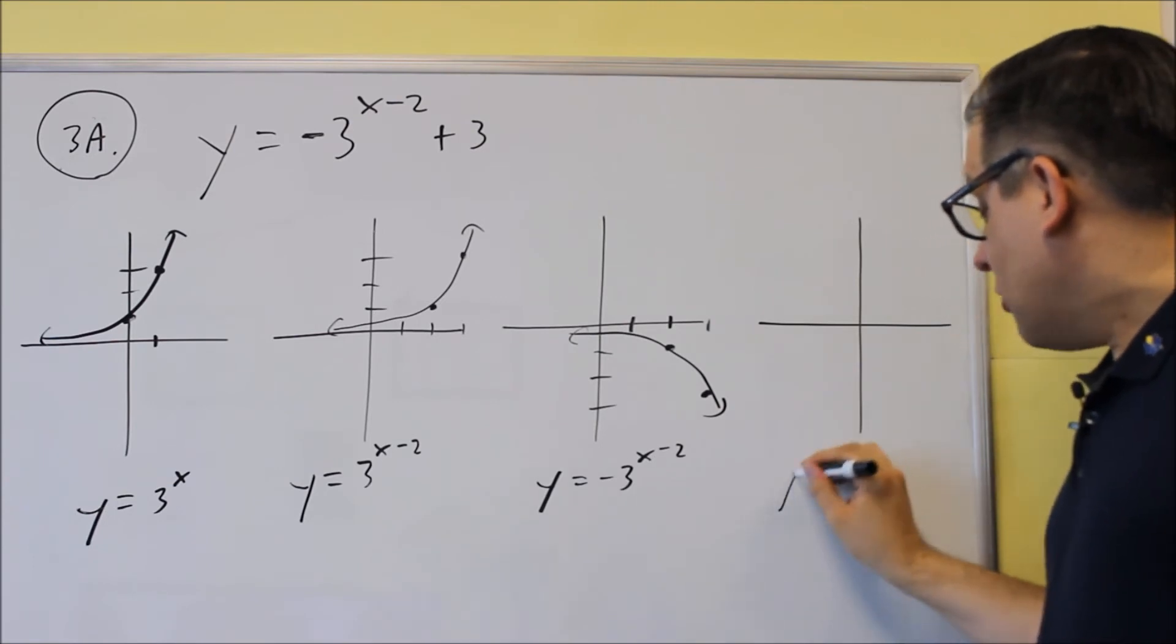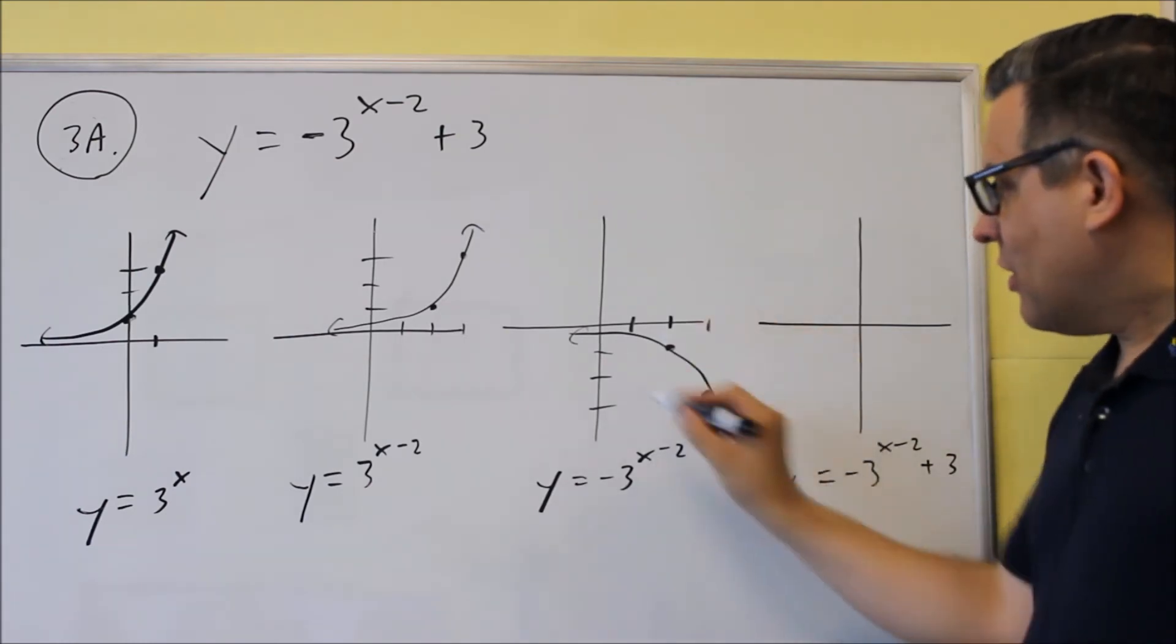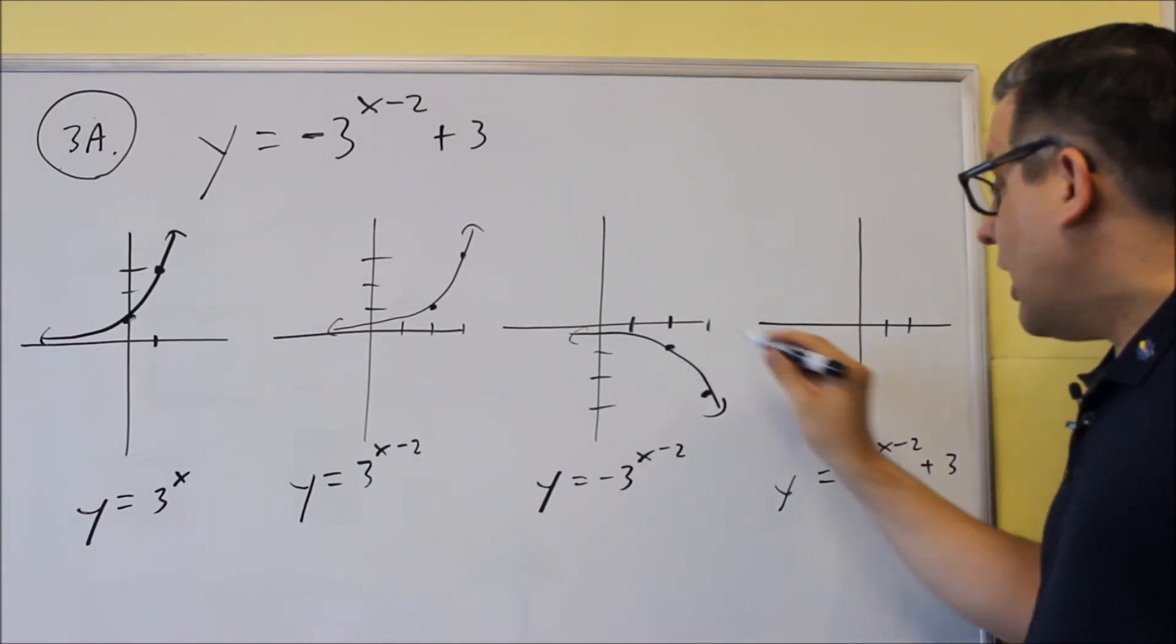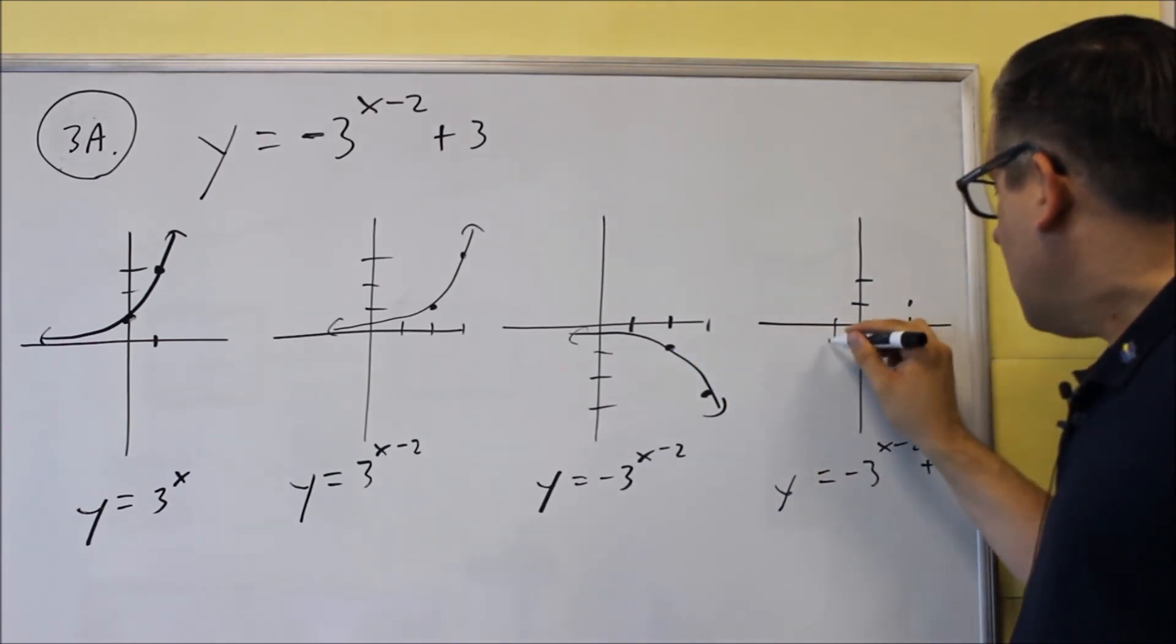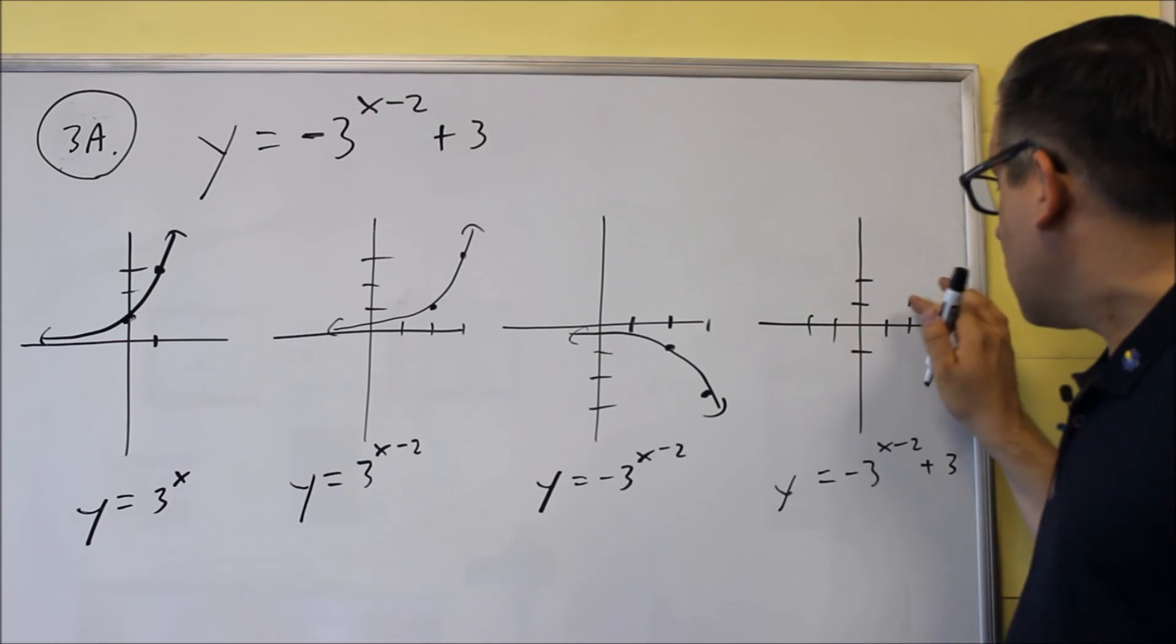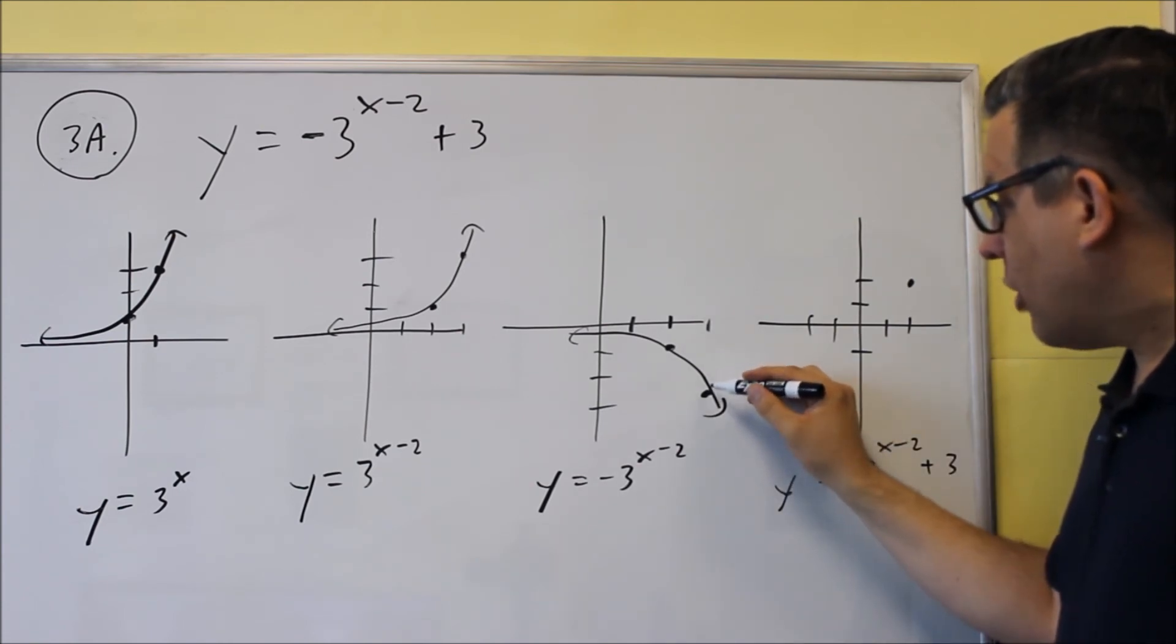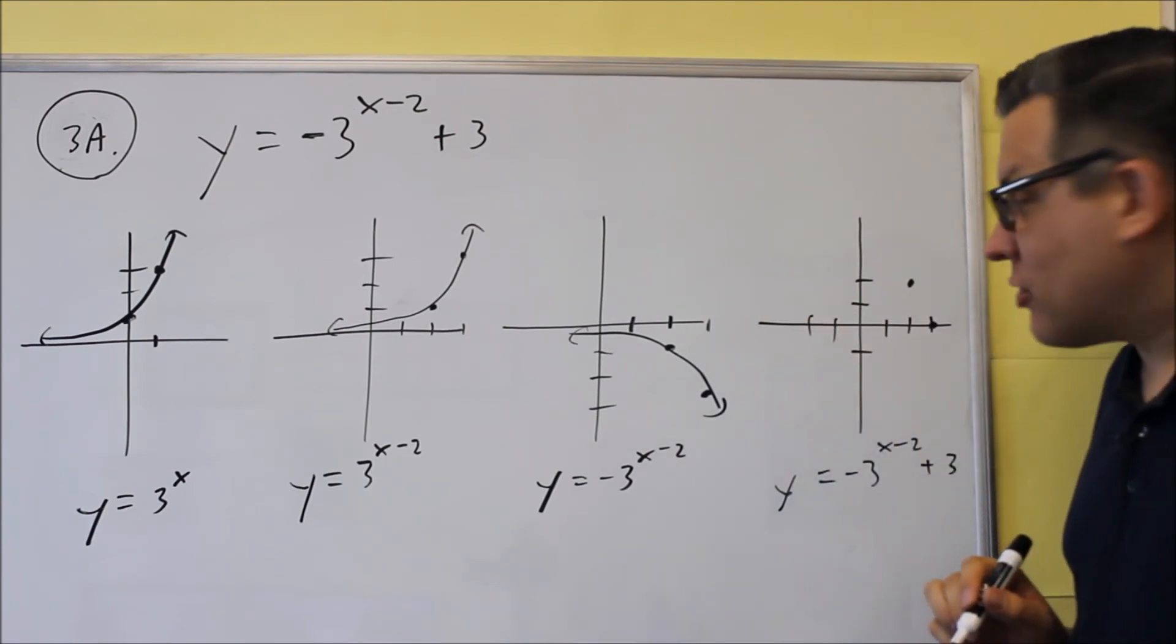The very last one is going to be our final graph, negative 3 to the x minus 2, plus 3. So we're going to take this graph the way it is and we're going to move the whole thing up 3 units. So the point that was there at 2, negative 1, that gets shifted up 3 units. So it's going to go up to here. Actually, it was at negative 1, so it goes up here. So it should be at 2, 2. And the other one here was at 3, negative 3. That gets moved up 3 units. So it's actually going to come right up to the x-axis there is where it's going to be.